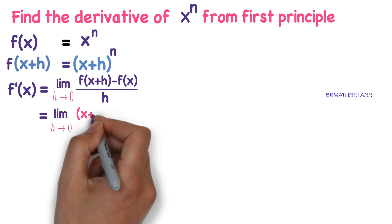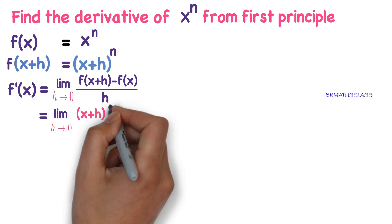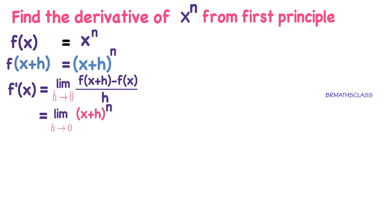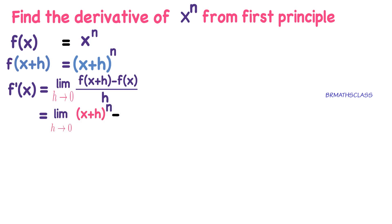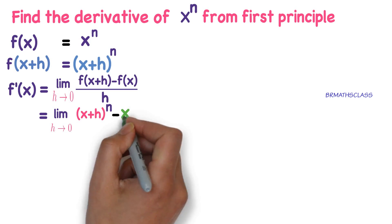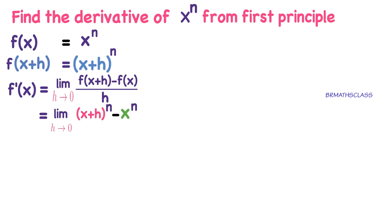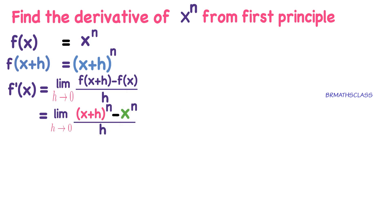Limit h tends to 0, f of x plus h is x plus h whole power n, minus f of x which is x power n, whole divided by h. Now you observe that numerator.